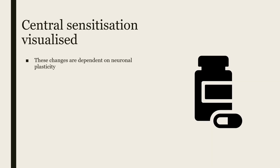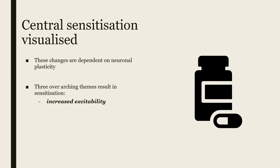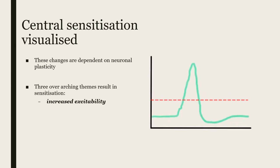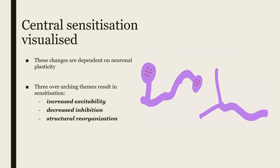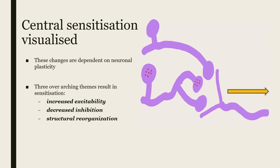In this illustration, I'm hoping to help visualize these central sensitization processes. These changes are dependent on neuronal plasticity. There are three overarching themes that result in sensitization: increased excitability, decreased inhibition, and structural reorganization. As you see here, there has been a sprouting of new fibers of the presynaptic neuron. This further increases the excitability potential and so you get further pain sensation being transmitted to higher centers.